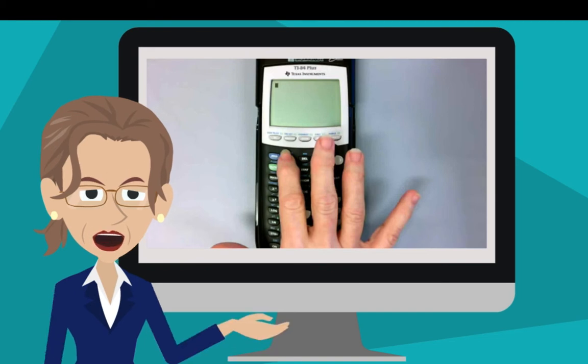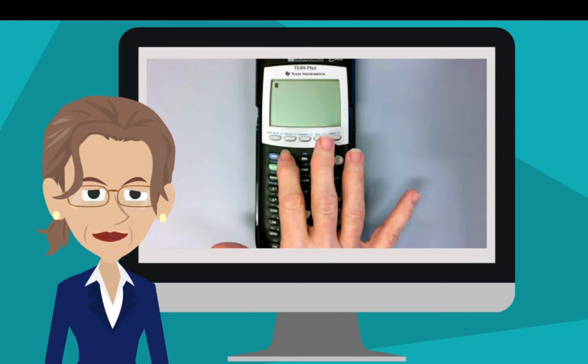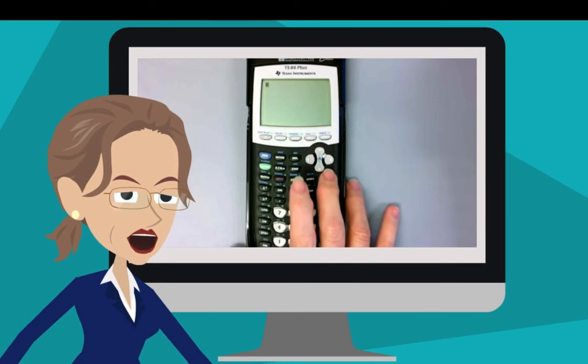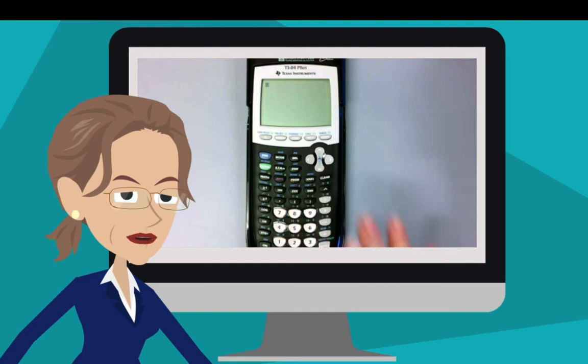And third, since we are going to use the math menu to change a decimal to a fraction, you're going to need a decimal number on your calculator. Press clear just to make sure you are starting with a clear screen. Then just type in the number 3.75. Okay, we are now ready to start.